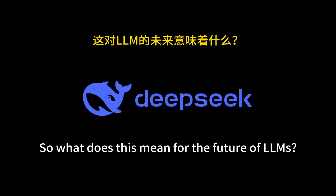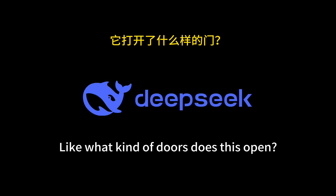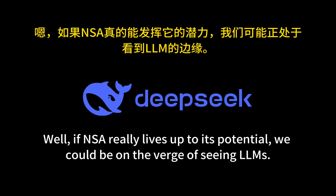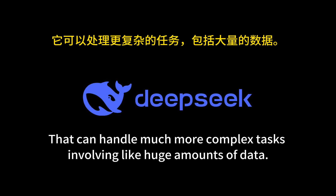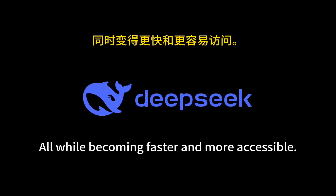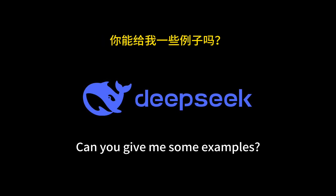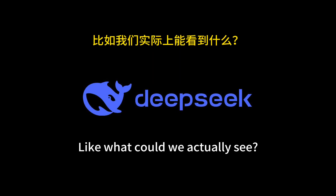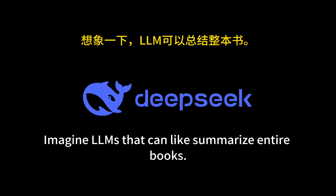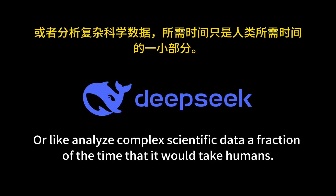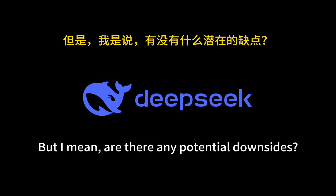If NSA really lives up to its potential, we could be on the verge of seeing LLMs that can handle much more complex tasks involving huge amounts of data, while becoming faster and more accessible. Imagine LLMs that can summarize entire books, generate code for massive software projects, or analyze complex scientific data in a fraction of the time it would take humans. But with any new technology, there are always unknowns and challenges to think about.